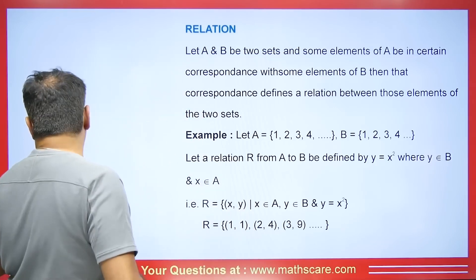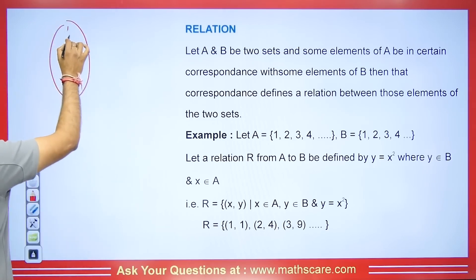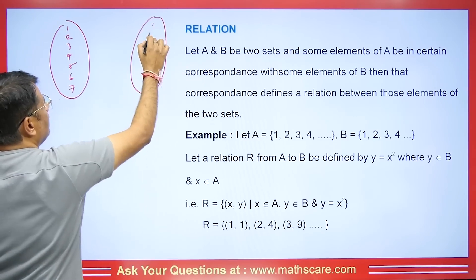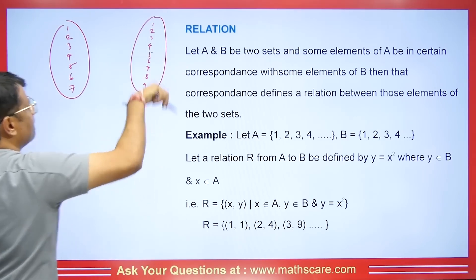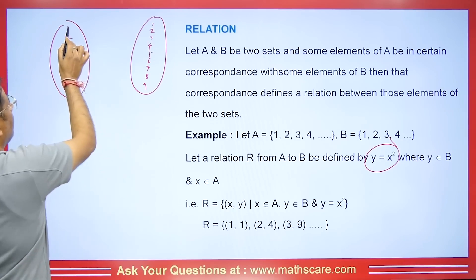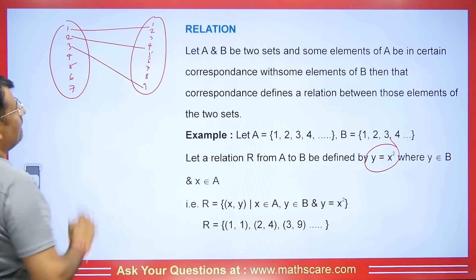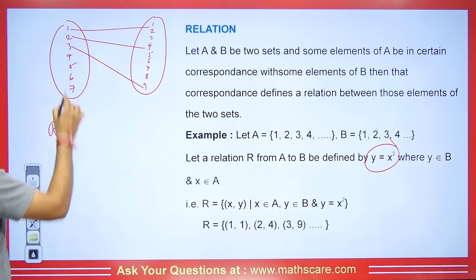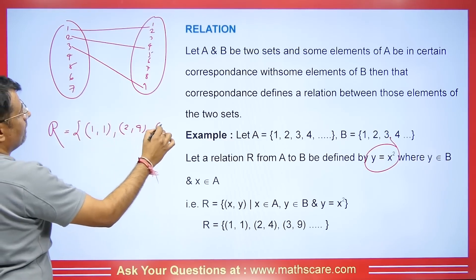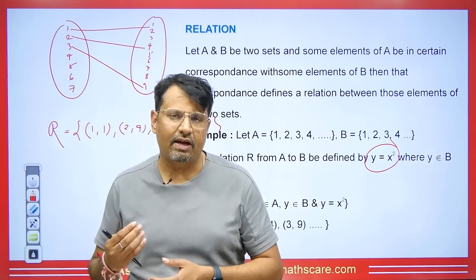For example, if we have set A and set B, and the elements given in set A are natural numbers like 1, 2, 3, 4, 5, 6, 7, 8, 9, the function defined here is y = x². If we put x = 1, its square is 1; if we put 2, its square is 4; if we put 3, its square is 9. So the relation will be: 1 goes to 1, 2 goes to 4, 3 goes to 9. Now how do we check whether this relation is reflexive, symmetric, or transitive?